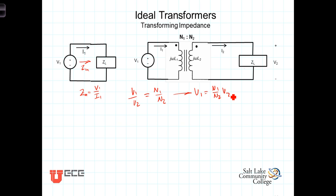And similarly, we have the current relationship I2 over I1 is equal to N1 over N2. Or solving this for I1, we have I1 is equal to I2 times N2 over N1.